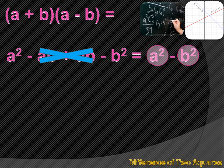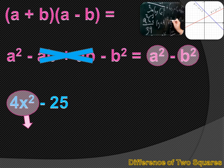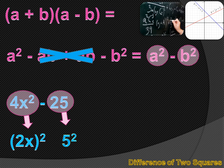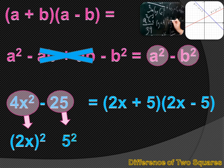So if I've got the difference of two squares and I want to factor it, it's going to be the square root of the first term plus the square root of the second term, times the square root of the first term minus the square root of the second term. For instance, if I had 4x squared minus 25, the square root of 4x squared is 2x, and the square root of 25 is 5. So factoring 4x squared minus 25 gives 2x plus 5 times 2x minus 5.